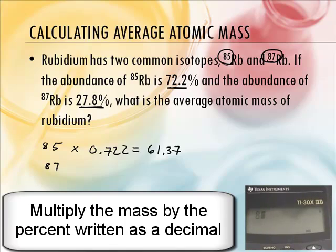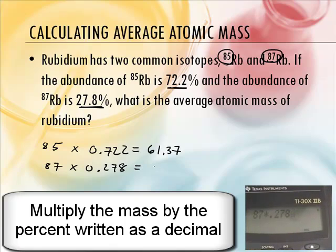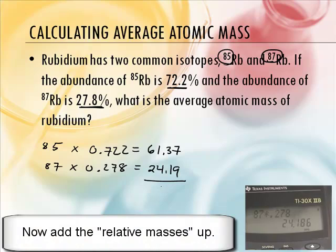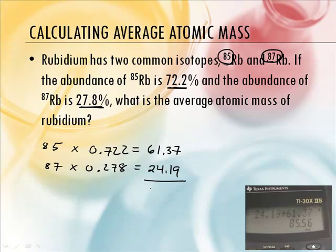And then rubidium 87 has a mass or a percentage of 0.278 or 27.8%. And you get 24.19. Okay. And then, of course, you'd add them up. Watch, folks, as Mr. Sams adds these two numbers up on his calculator. All right. 24.19. It's amazing, isn't it? Plus 61.37. I bet you could have done this in your head faster than I did on the calculator. I could, actually. 85.56.